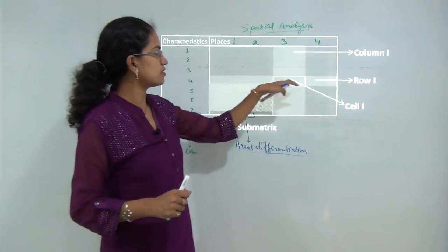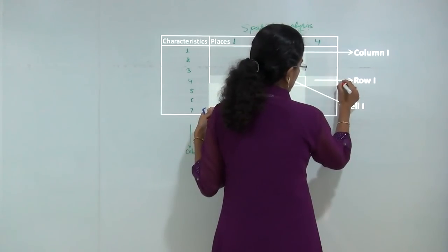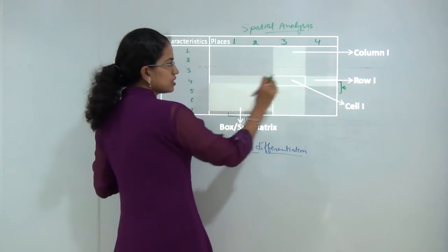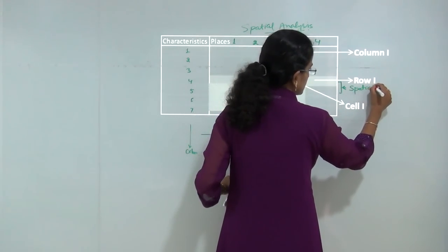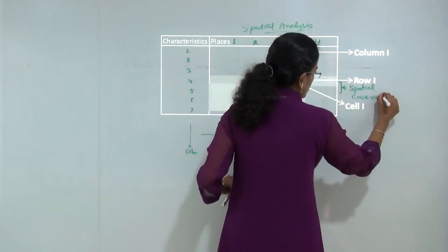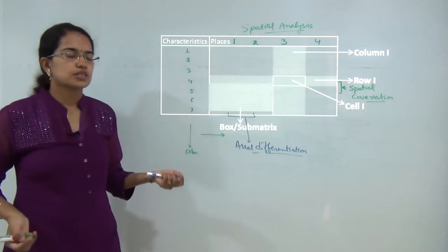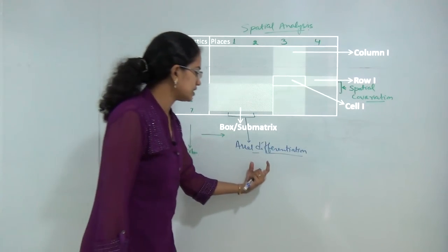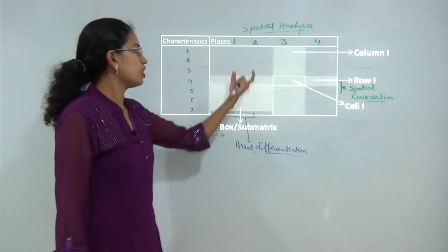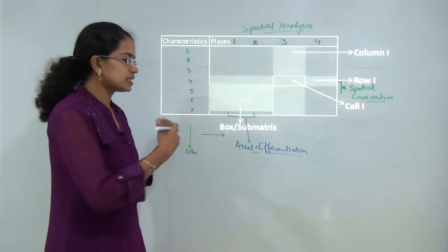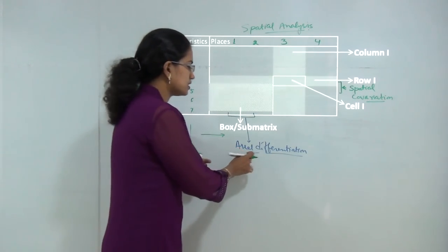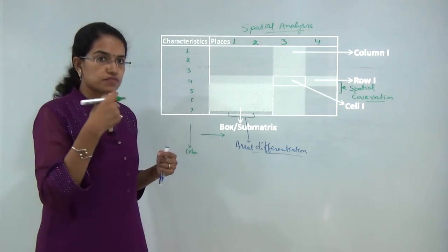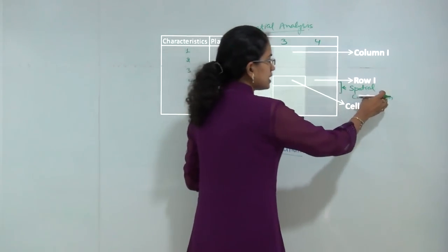Within the same place, I am trying to understand the various characteristics. If I am trying to compare two rows - two characteristics of one place - I could call it spatial covariation. What Berry tried to explain was: across rows there is spatial covariation, but across columns you have aerial differentiation. The reason is that across columns you have different places, so you see differences in the region. But across rows he tried to explain differences in the characteristics of a single place, and that could be explained as spatial covariation.